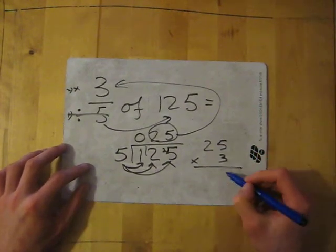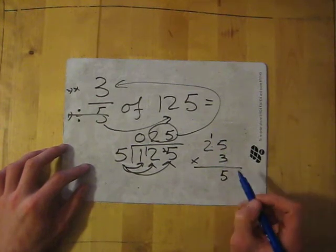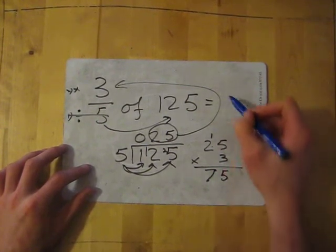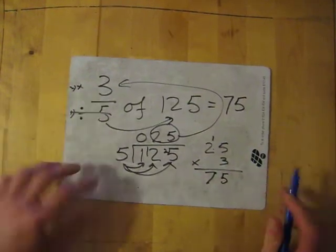3 times 5 gives me 15, carry the 1. 3 times 2 gives me 6, carry the 1 gives me 7. So my answer is 75. So divided by the bottom, times by the top.